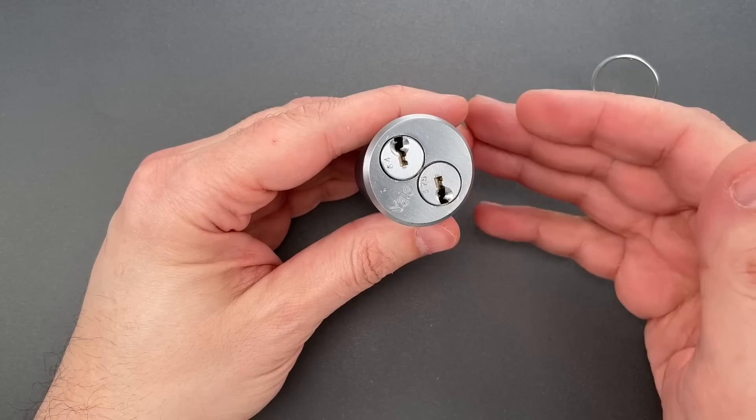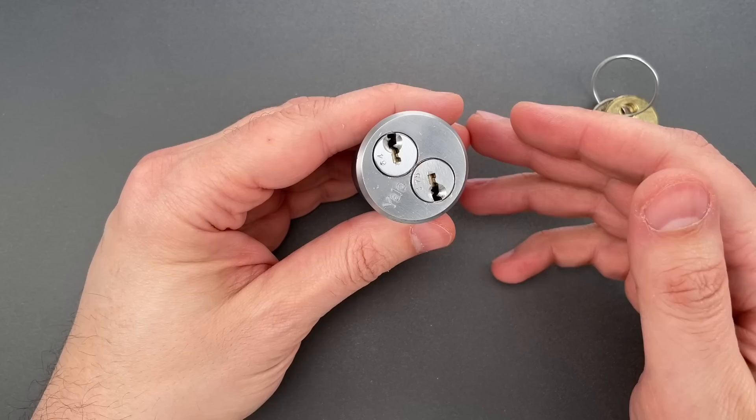What you see here is a Yale Bicentric Rim Cylinder. It's a type of lock that I believe was introduced a little over 100 years ago.